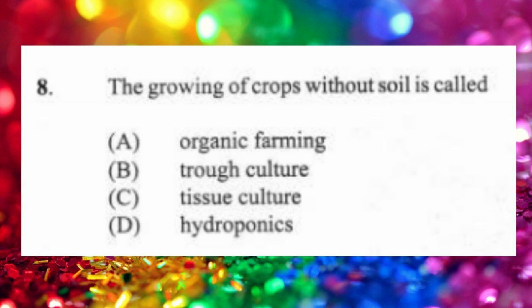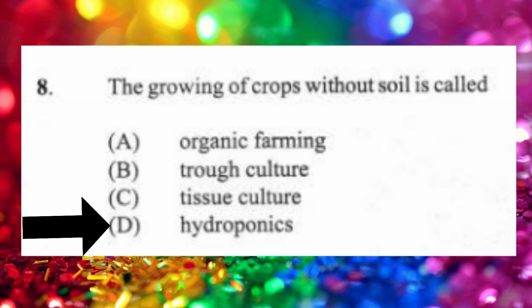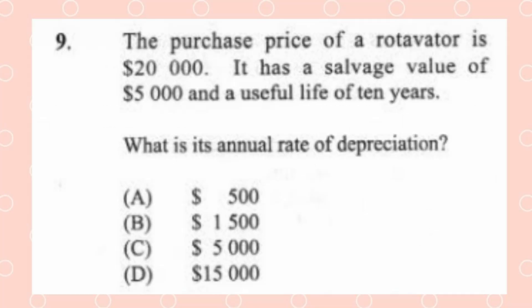Question 8: The growing of crops without soil is called (a) organic farming, (b) trough culture, (c) tissue culture, (d) hydroponics. The answer is D, hydroponics. The term 'hydro' stands for water.